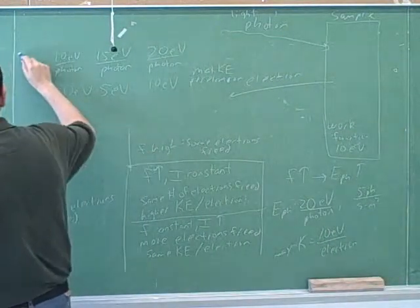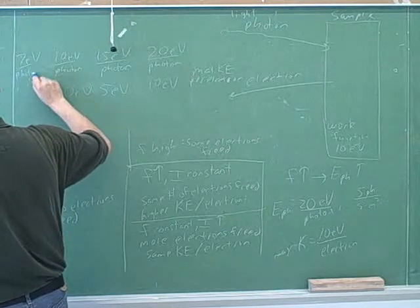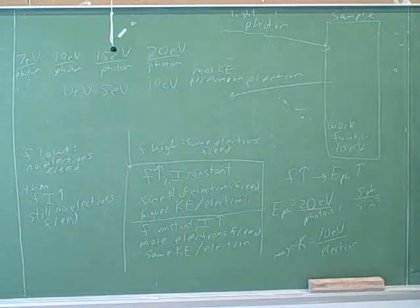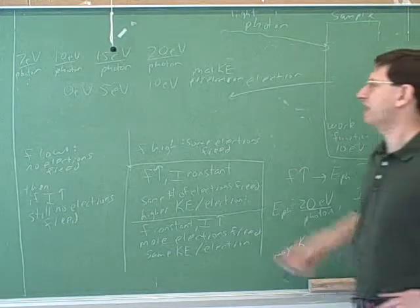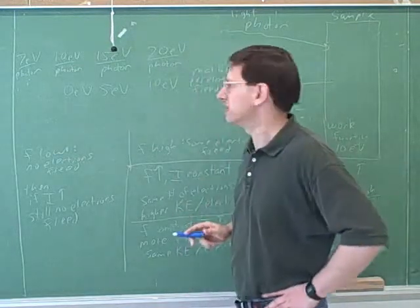Now here's a trick question. What would happen if there were seven electron volts per photon? Yeah, so it doesn't even make sense to ask what the maximum kinetic energy per electron freed would be because there wouldn't be any electrons freed.